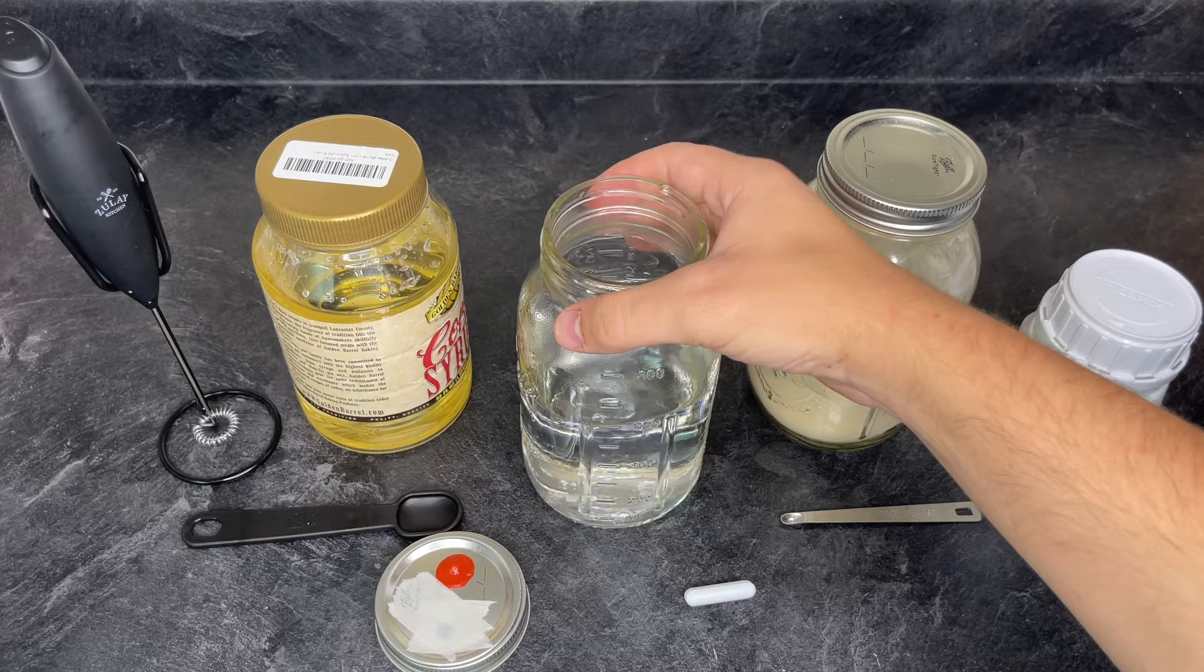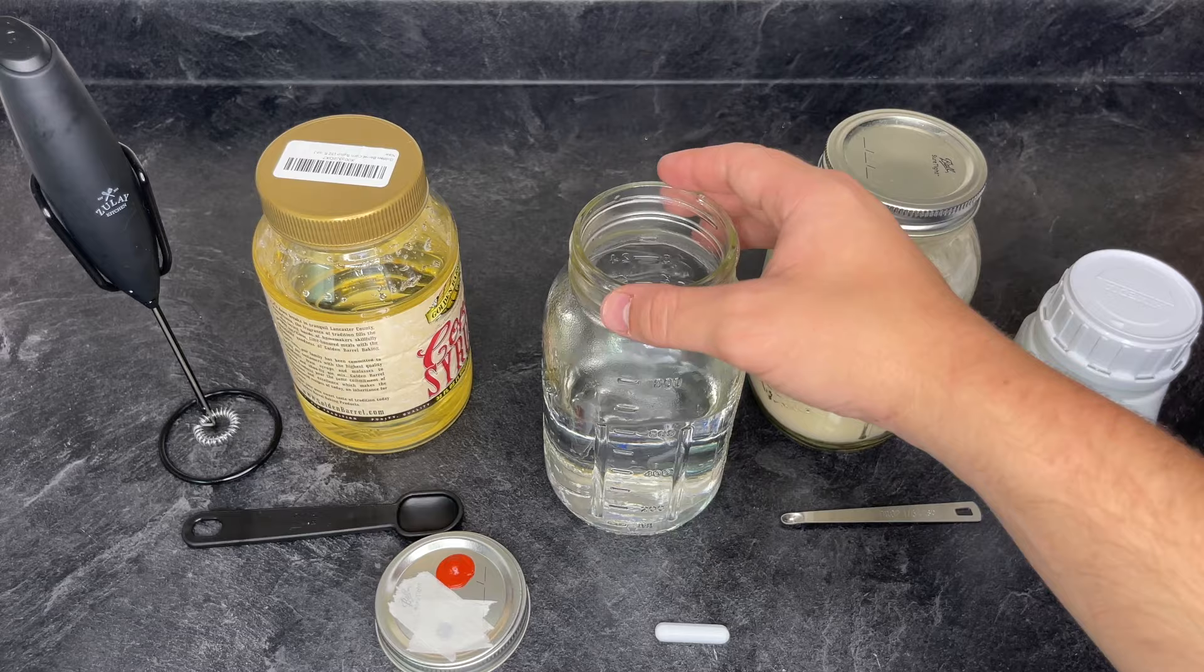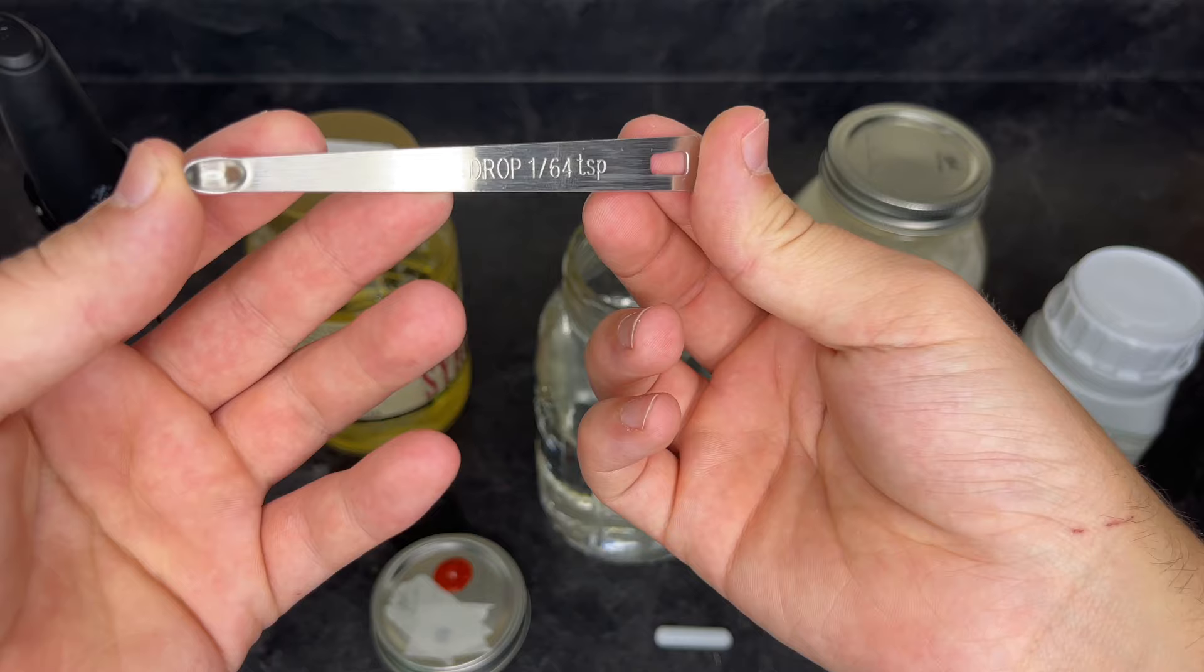After making many different batches and comparing them, I found the best measurement for me was 1/4 teaspoon of the light malt extract and peptone into 600 milliliters of hot, distilled water.